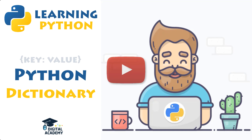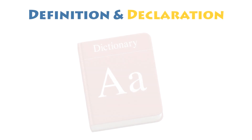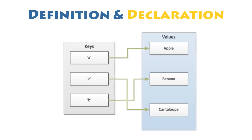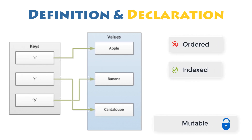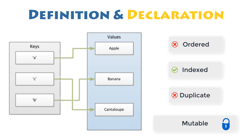Now let's play this video. A dictionary in Python is a collection of items which is unordered, indexed by keys, and mutable, so it can be changed once it has been created. While other data types have a value as an element, a dictionary has a key-value pair, where each key is mapped to a single value. Consequently, dictionaries are optimized to get values when the key is known.